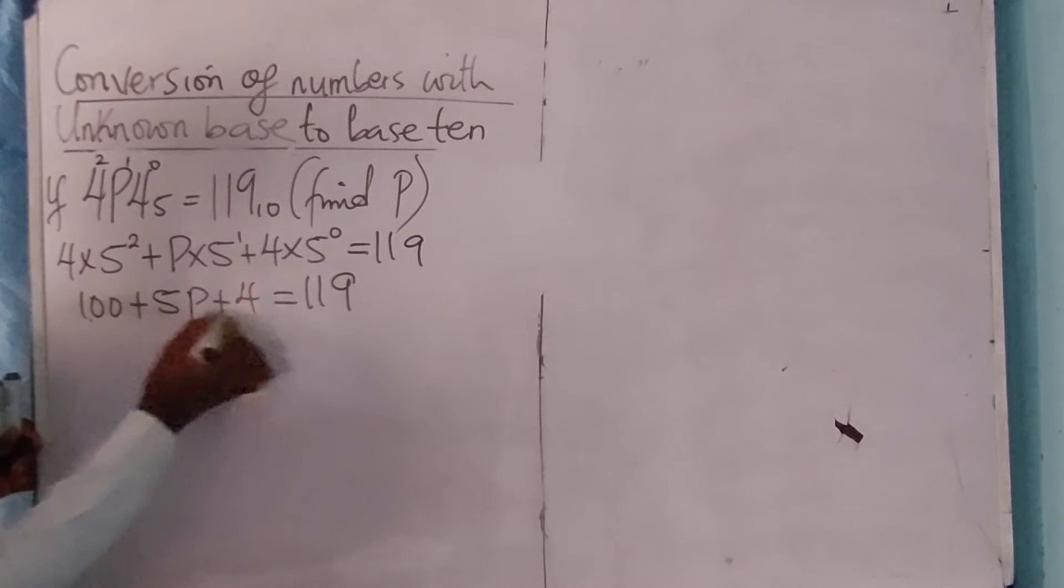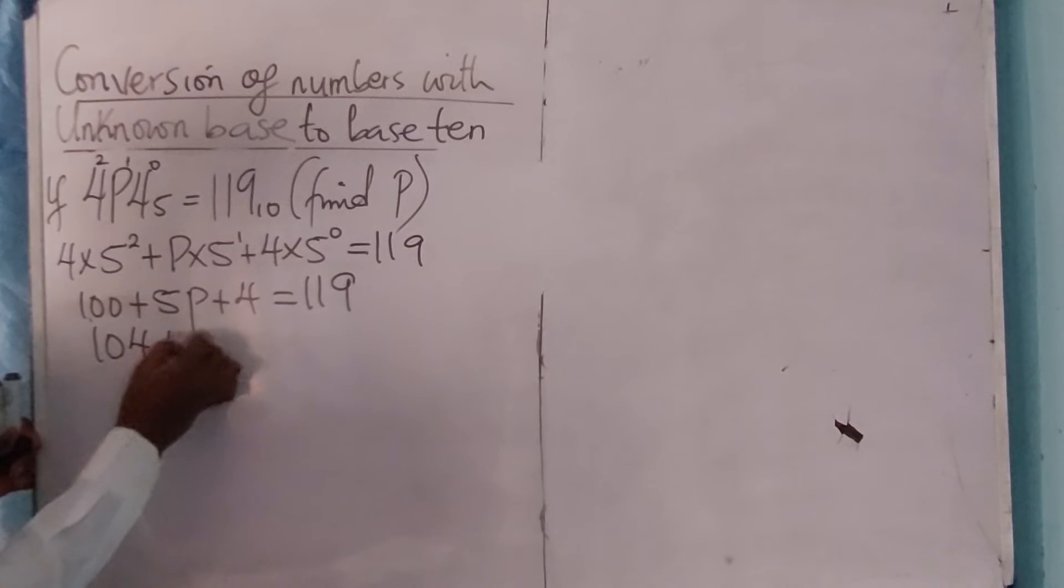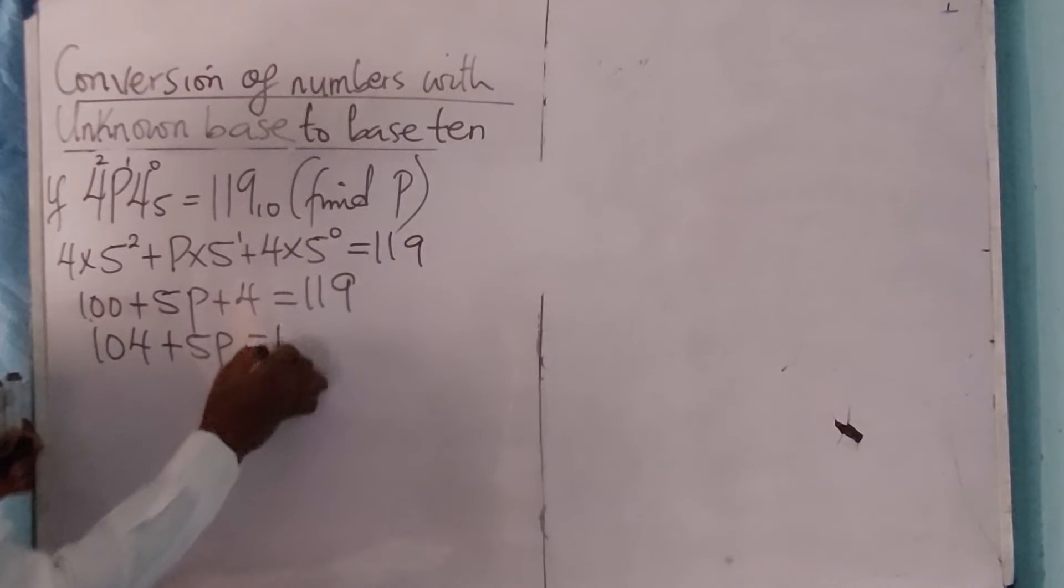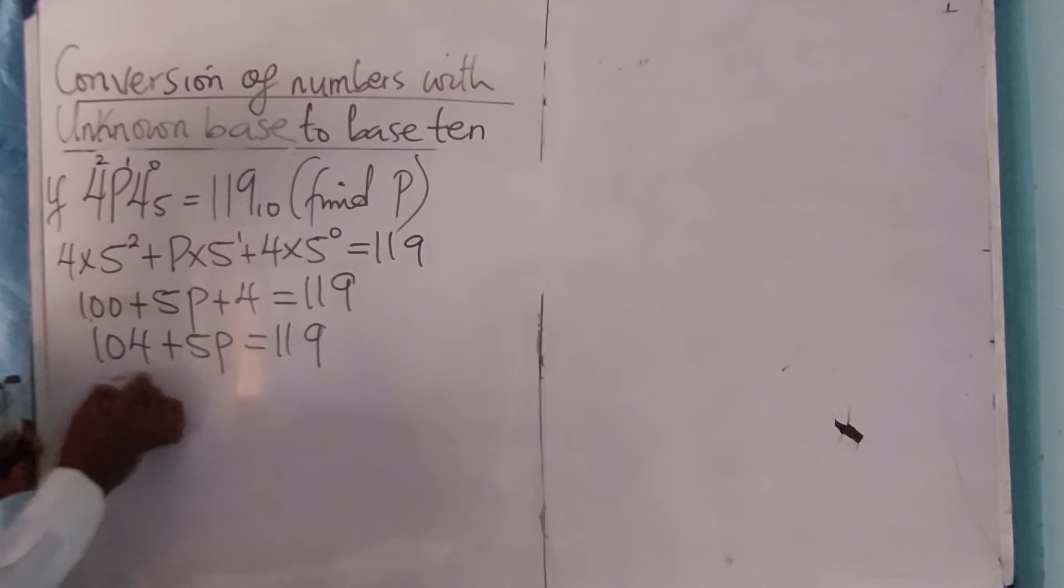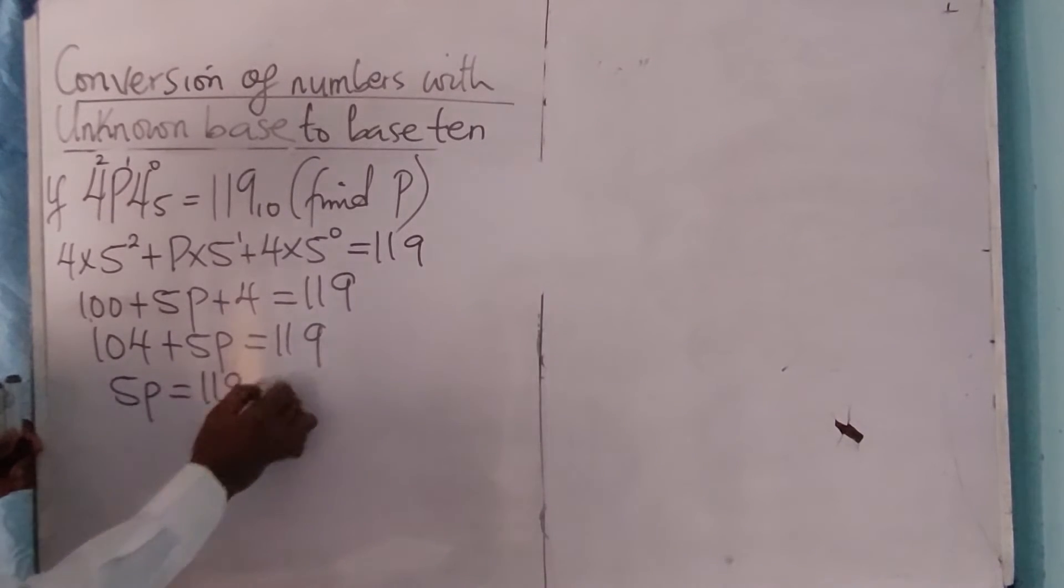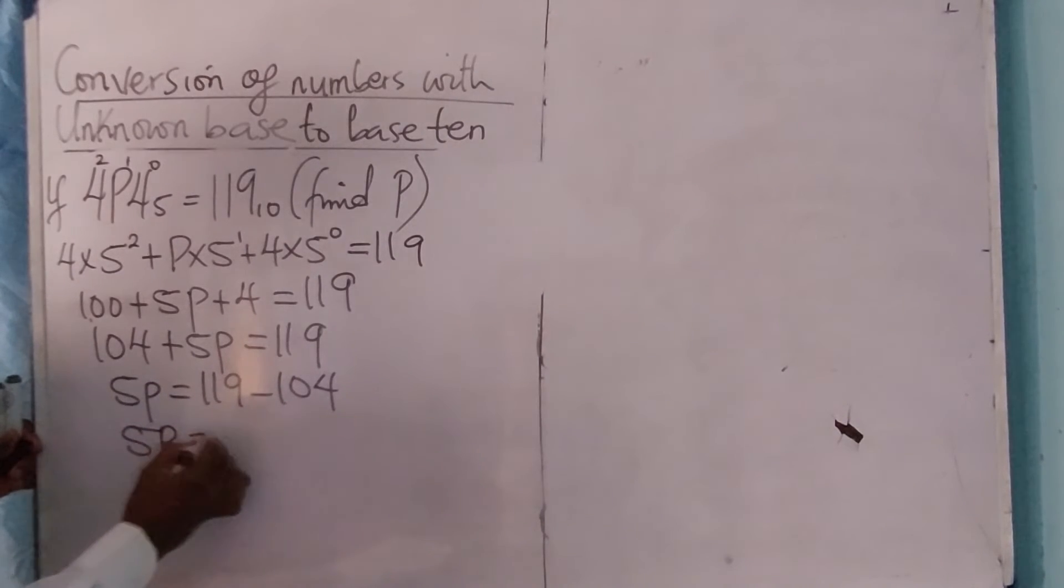100 plus 4 is 104. 104 plus 5P equals 119. Therefore, 5P equals 119 minus 104, so 5P equals 15.